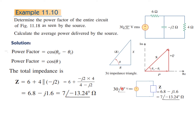Now there is an equivalent circuit. From the total impedance, we calculate the power factor. The cosine of theta is equal to 0.9734.